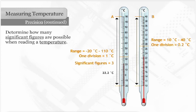The temperature can be read to one decimal place past the value of the smallest division. So for divisions equal to a tenth place, the temperature can be read to the hundredths place.